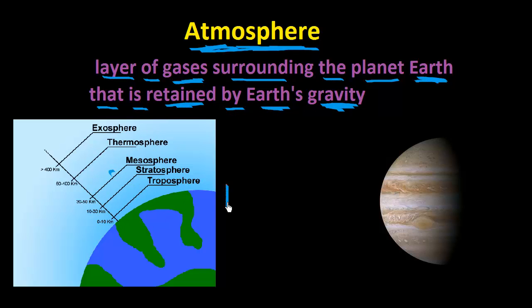Here's the Earth, right here's Earth, and then we have these layers right here. So we have the troposphere, the stratosphere, the mesosphere, the thermosphere, and the exosphere.